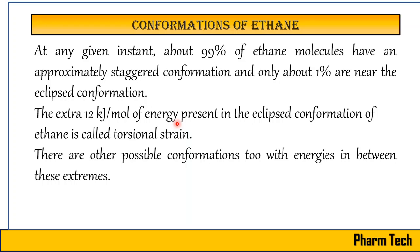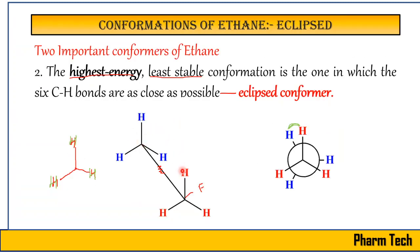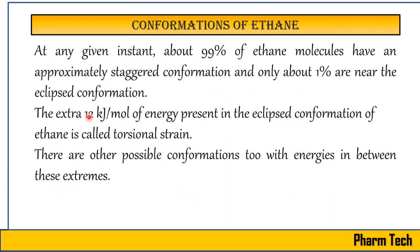The molecule turns from staggered to eclipsed and eclipsed to staggered continuously. When going from one staggered form to the next staggered form after rotation, it passes through the eclipsed conformation. These ongoing rotations are what we refer to as rotamers forming, or conformational isomerism occurring. There are other possible conformations between these two extremes of eclipsed and staggered conformer.